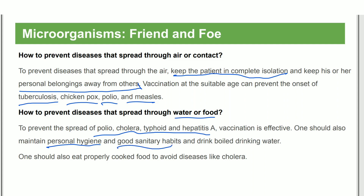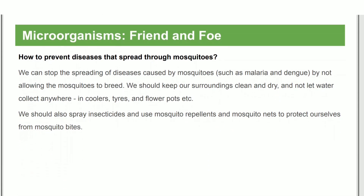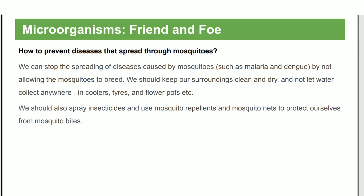Good sanitary habits, drinking clean water, and eating properly cooked food help prevent food-borne diseases. To prevent mosquito-borne diseases, mosquito breeding conditions should be eliminated by keeping the environment dry and clean. Mosquito nets and mosquito repellents should be used for protection.